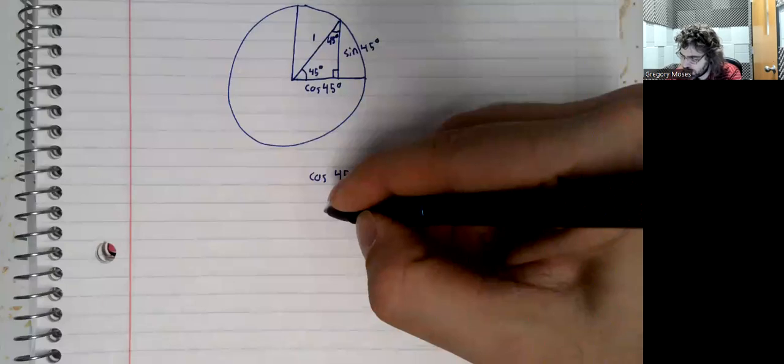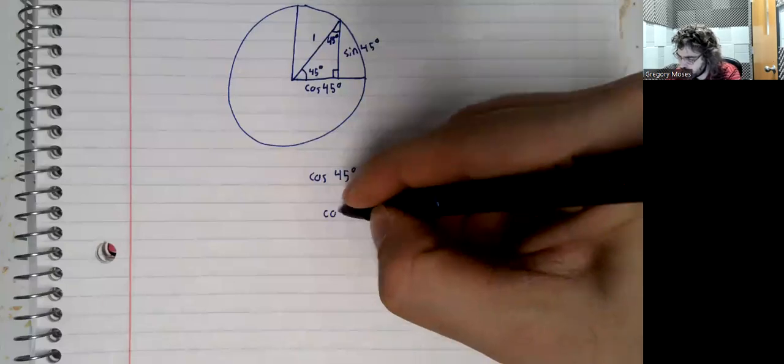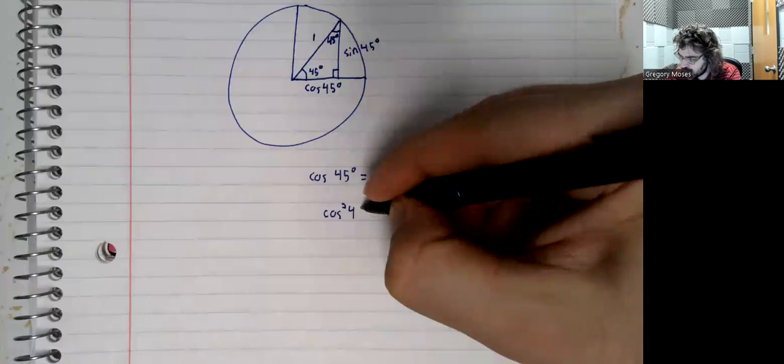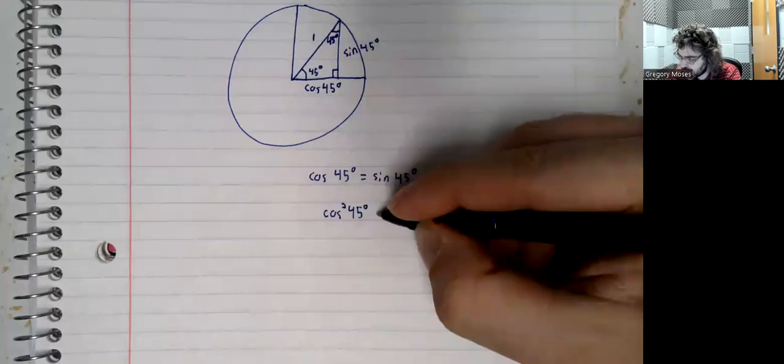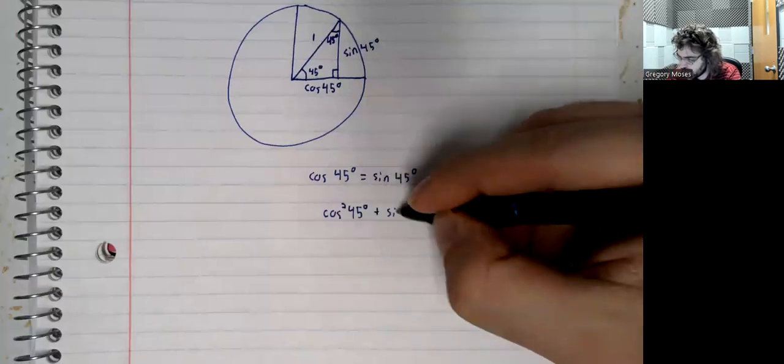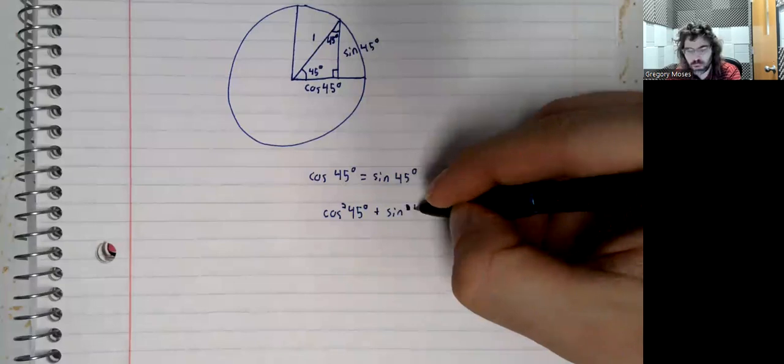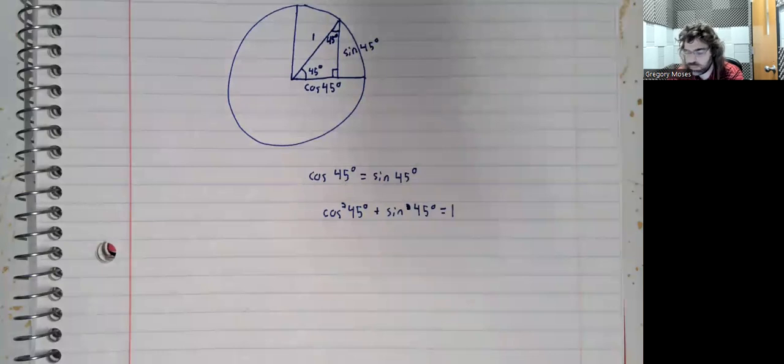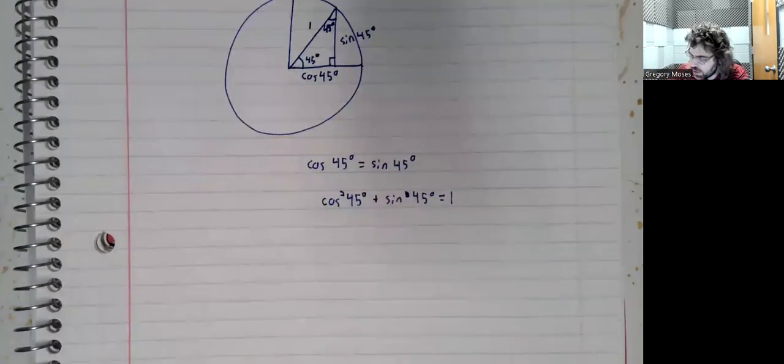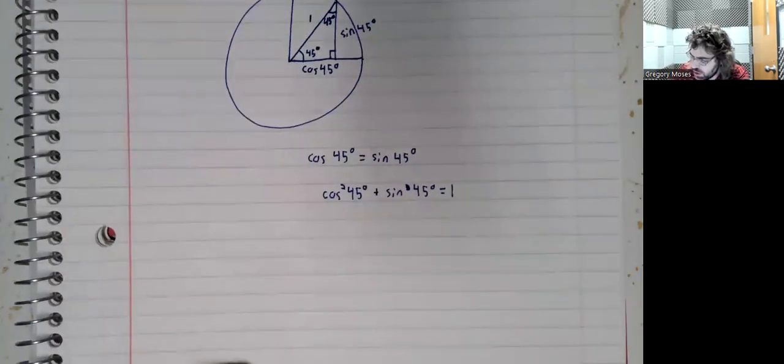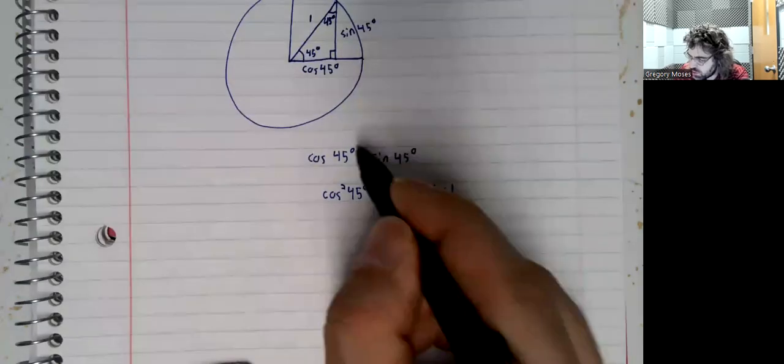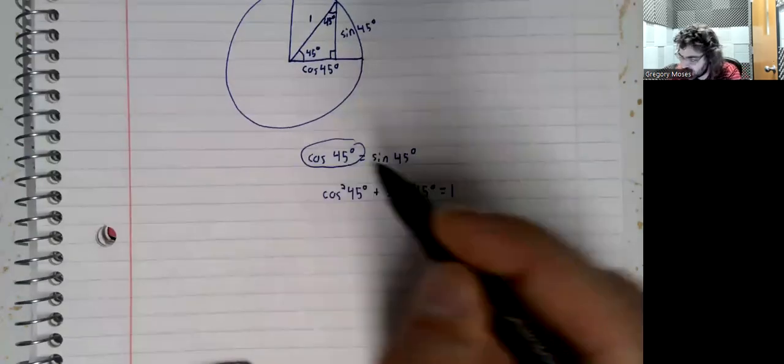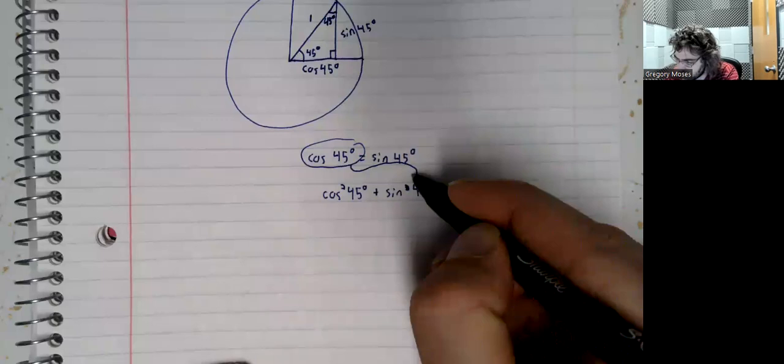the cosine squared plus the sine squared equals 1. That's the Pythagorean identity. The cosine and the sine are the same, so the sine squared is the cosine squared.